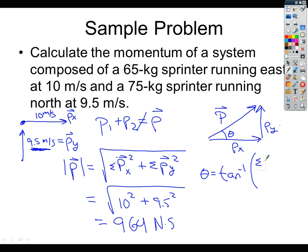So we can solve just for the angle itself by saying the inverse tangent of the sum of the momentum in the y divided by the sum of the momentum in the x-direction, and because we only have one y and one x-direction, this is very simple, so it's just tangent inverse of 9.5 divided by 10, and you end up with 47.6 degrees.